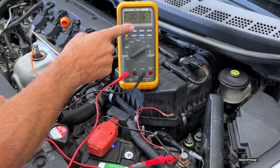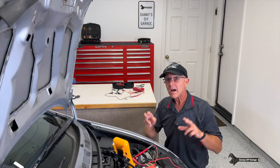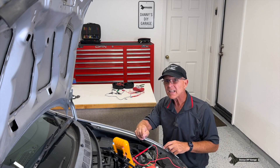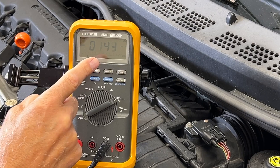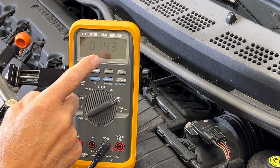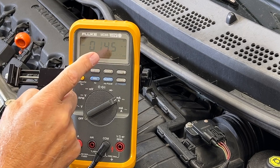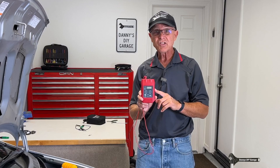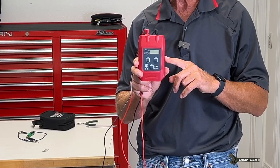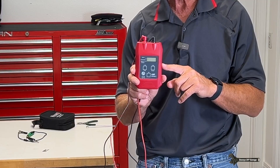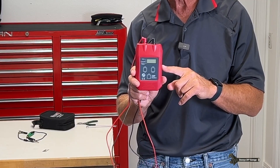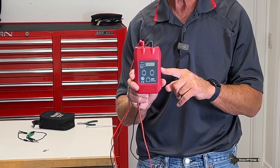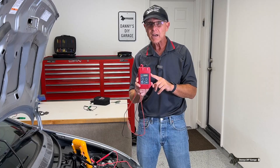Let me show you what this would look like if I had a parasitic draw. I accidentally left a light on that's causing this parasitic draw, and this will cause your battery not to start overnight. Let me show you the tool you'll need and how to find the circuit causing the draw. This is the Amp Hound 2 — this tool was designed specifically to trace down and help you find the circuit that's causing a parasitic draw.